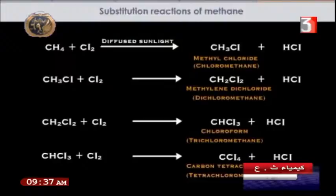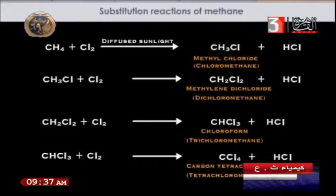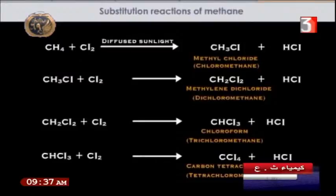In this substitution reaction, chlorine replaces hydrogen atoms one at a time, giving different compounds. This reaction requires diffused sunlight — not direct sunlight and not in a lab setting. The most famous product from this reaction is chloroform.